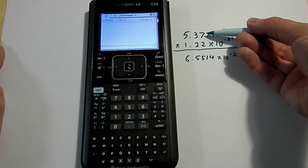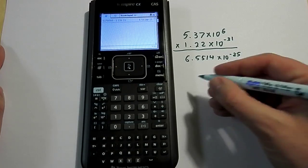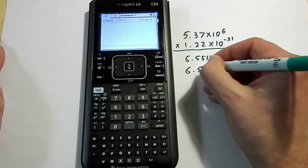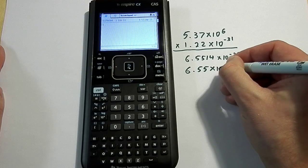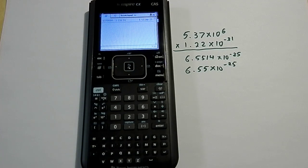So looking at this number, it's really only 3 sig digs, and looking at this number, it's really only 3 sig digs. So I should really be rounding off this answer to 6.55 times 10 to the negative 25 as my final answer with only 3 sig digs.